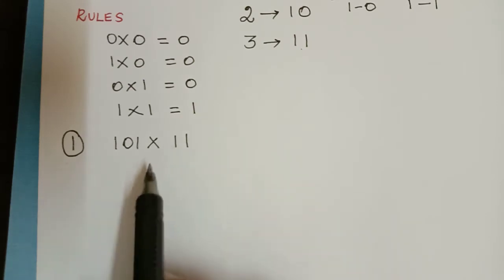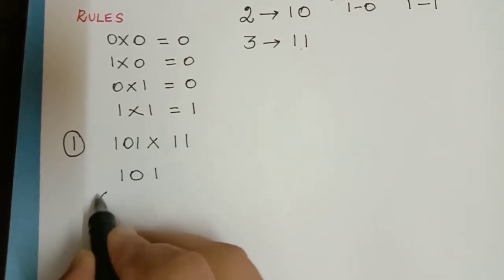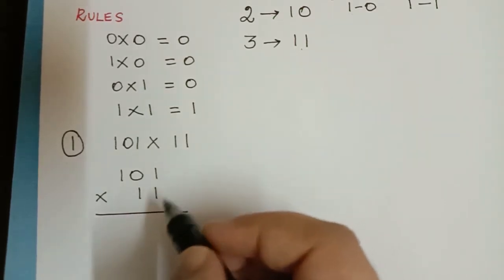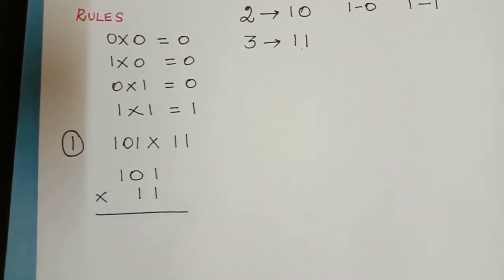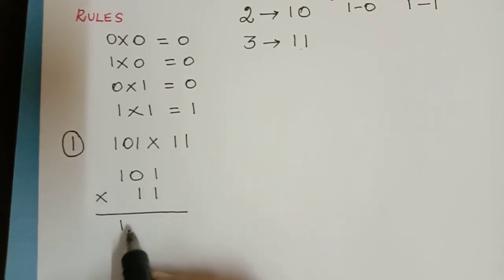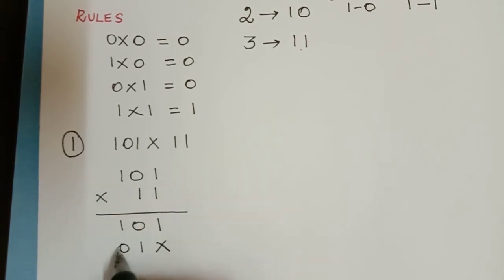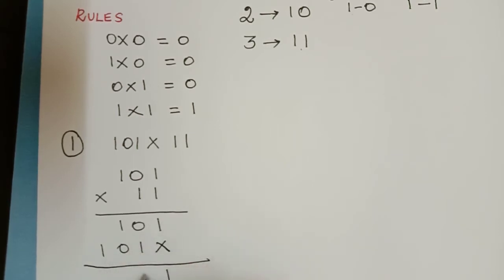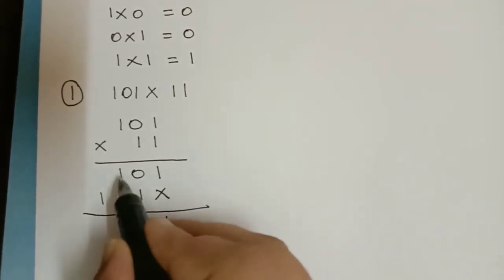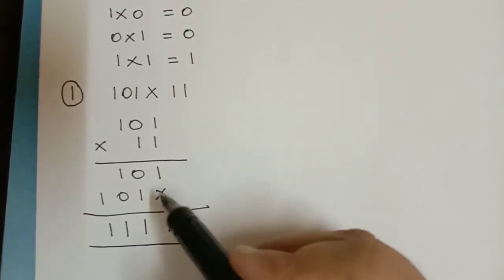We shall now multiply the binary number 1,0,1 with 1,1. When we multiply 1,0,1 by 1,1, it is the usual multiplication. So this 1 has to give 1,0,1, and then put a cross, and this 1 has to be multiplied with these numbers and we get 1,0,1. So adding: 1,0 plus 1 is 1, 1 plus 0 is 1, and this 1 comes down.